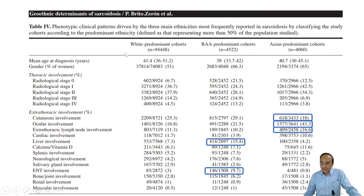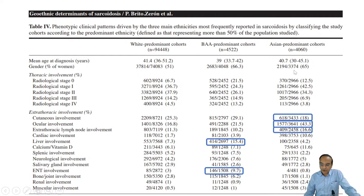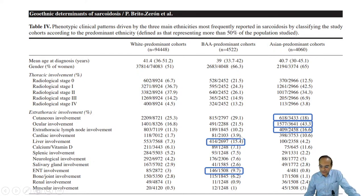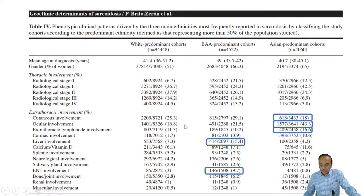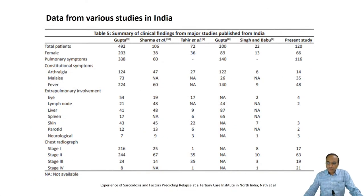Comparing white-predominant, Black/Afro-American, and Asian-predominant cohorts, the relative age is around 40 with a female preponderance. In the Asian cohort, eye involvement is pretty common, followed by cutaneous and lymph nodal involvement. Liver involvement is present and ENT involvement is also seen at high prevalence in some cohorts — something unique that other cohorts don't have. Constitutional symptoms like arthralgia, malaise, and fever are quite common in the Indian setup.